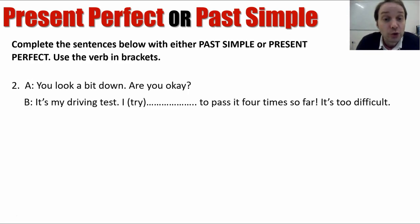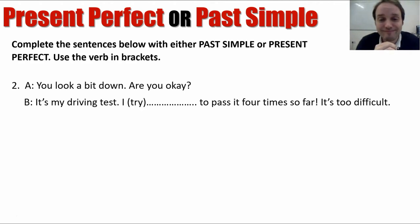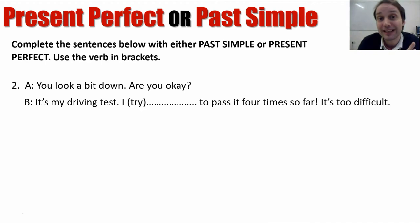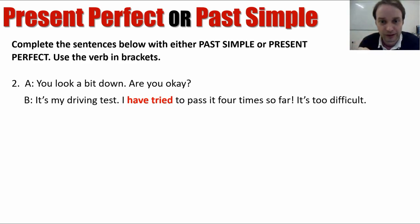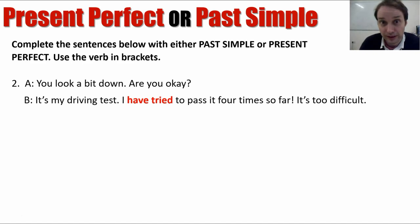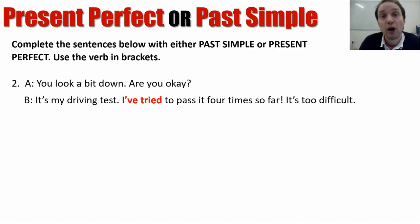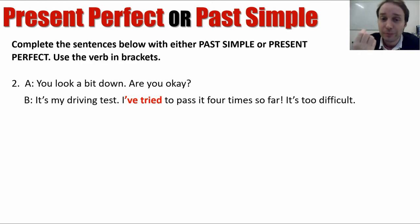Number two: Two people talking. A says 'You look a bit down — are you okay?' ('Down' is slang for looking a bit depressed or sad.) B replies: 'Yeah, it's my driving test. I [try] to pass it four times so far. It's too difficult.' The answer is 'have tried' — present perfect. Try is a regular verb: try, tried, tried. So 'I have tried,' and for spoken English we contract: 'I've tried to pass it four times so far. It's too difficult.'